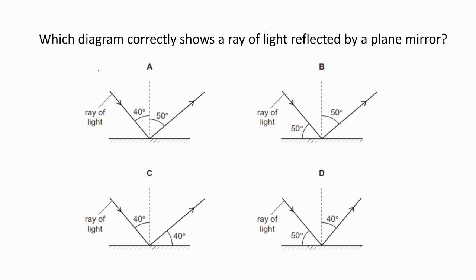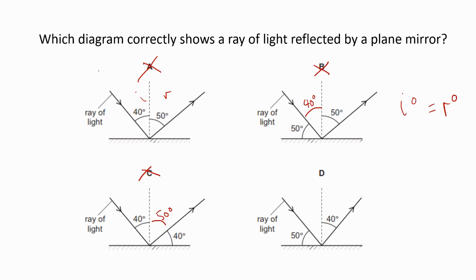Here is an example question that tests your knowledge on the law of reflection: which diagram correctly shows a ray of light reflected by a plane mirror — is it A, B, C, or D? The law of reflection states that the angle of incidence equals the angle of reflection, measured from the normal. A is incorrect because i and r are not equal. B is incorrect since we have a 90-degree angle and i and r are not equal. C is also incorrect as i and r are not equal. D is the correct answer since angle i is 40 degrees and angle r is 40 degrees.